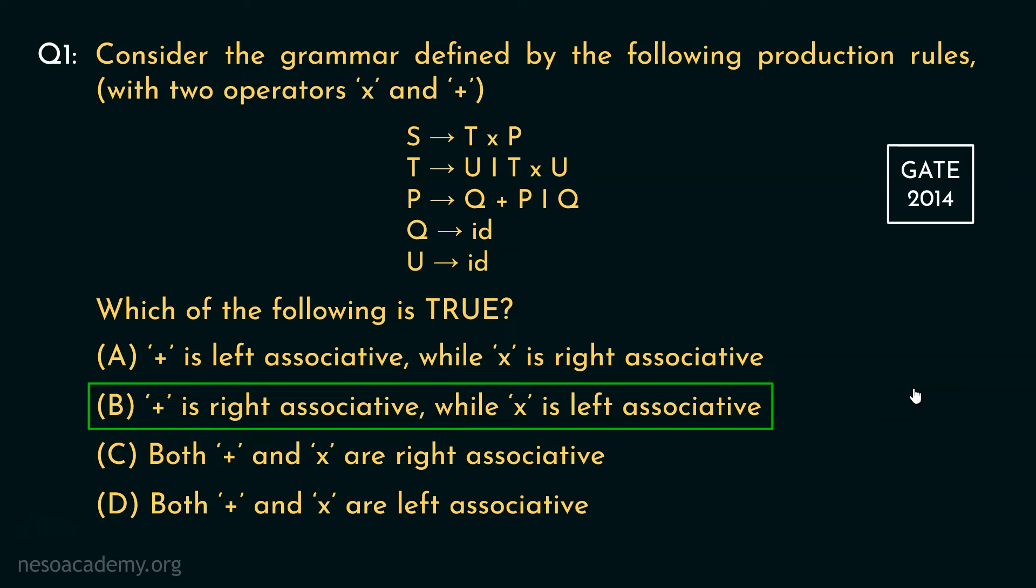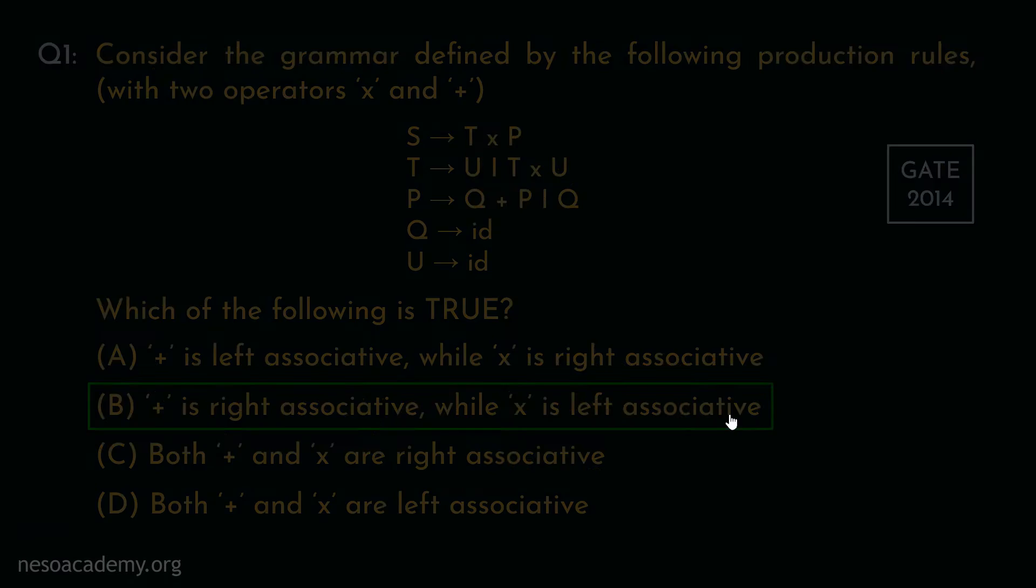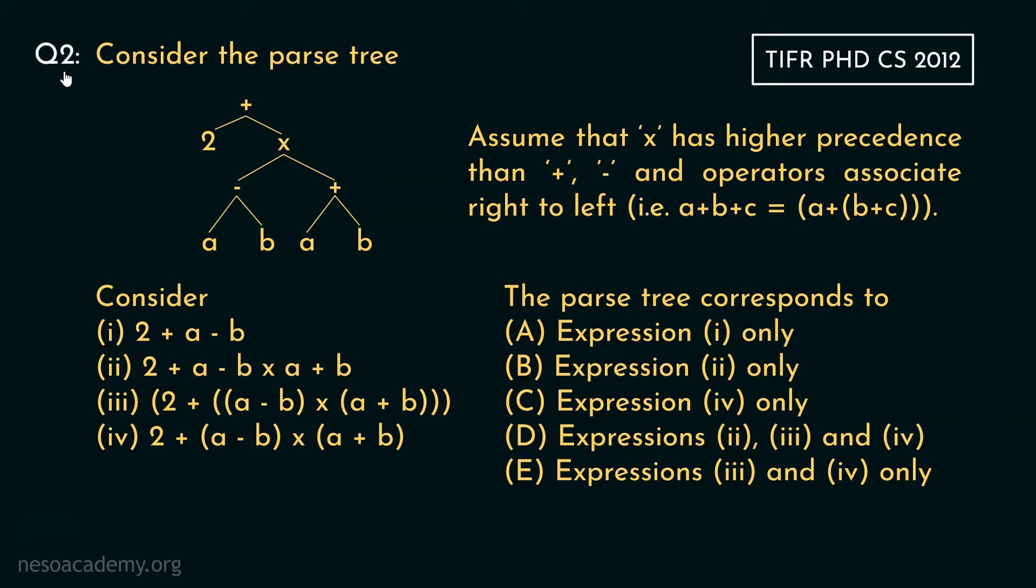Let's now move on to the next problem. Observe the second question. Consider the parse tree. This is the parse tree. Now, we are to assume that into has higher precedence than plus and minus and operators associate right to left like this. So, A plus B plus C is actually A plus bracket B plus C.